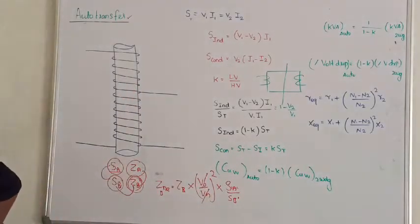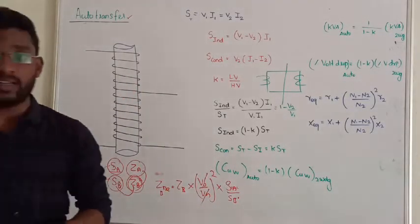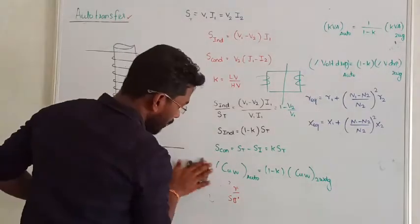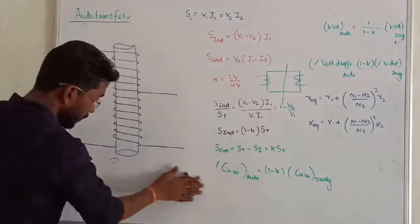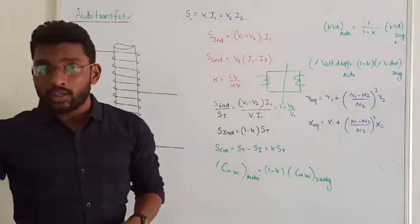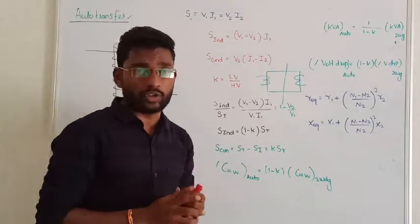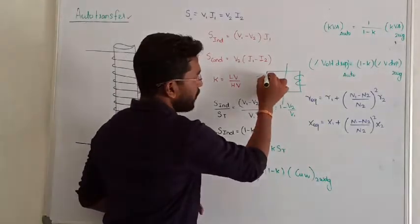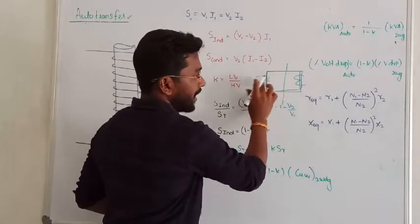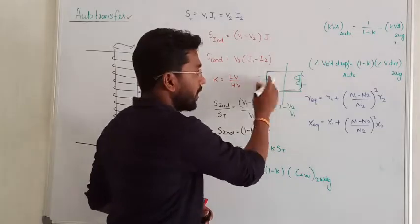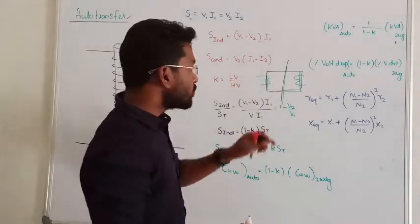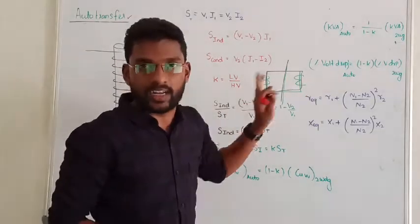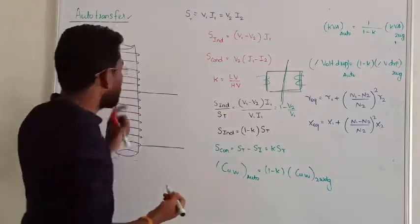Now we are going to start a new chapter: the autotransformer. In a two-winding transformer we have two electrical windings that are electrically isolated — there is no electrical connection between the primary and secondary winding. The autotransformer is different in this regard.